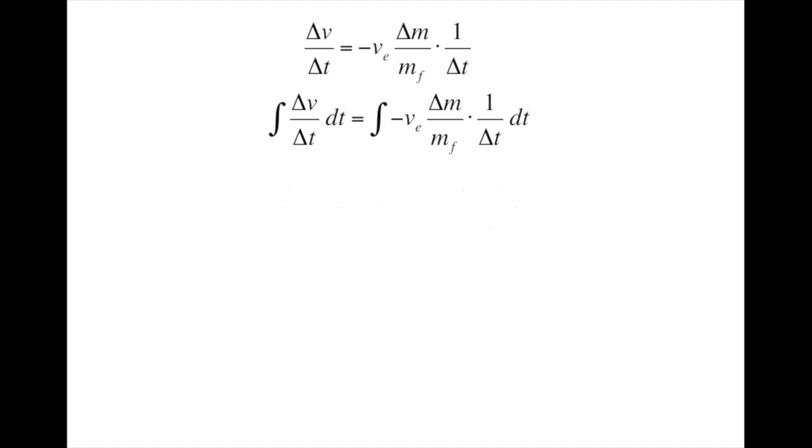We'll assume VE is constant. It very well may not be, especially if you are traveling through the atmosphere. Yes, even in KSP. But in the vacuum of space, this is an acceptable approximation to make. This means we can remove it from the integral, along with the negative sign.